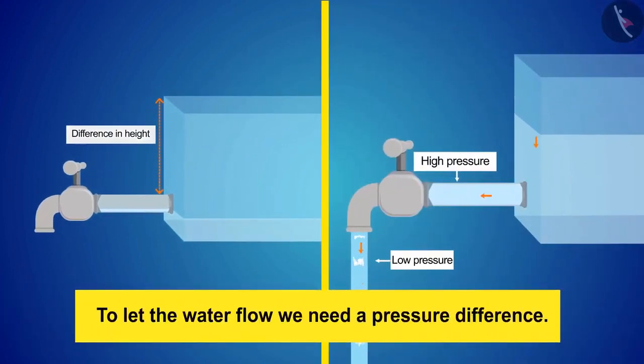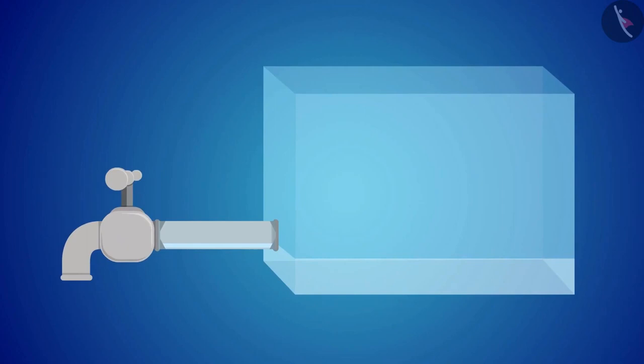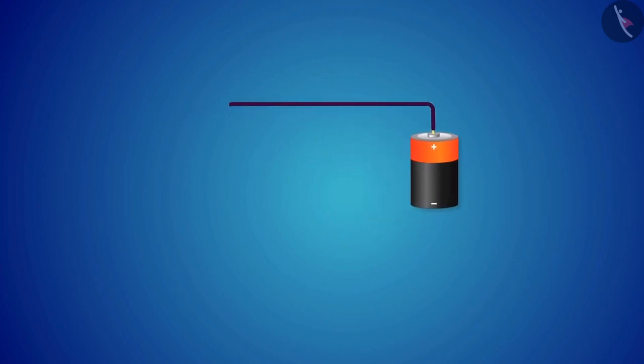If the water pipe is replaced by metallic wire and the water tank is replaced by a battery, then we get something like this. We know that the circuit must be closed for the current to flow.